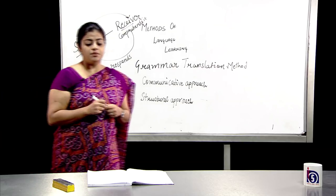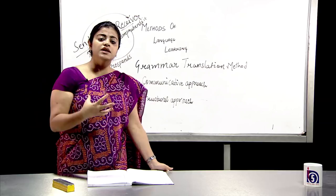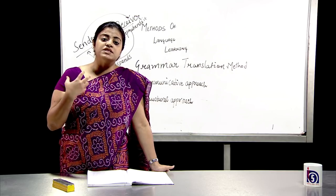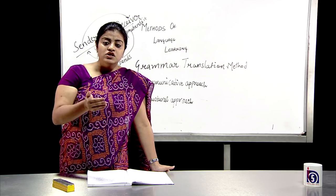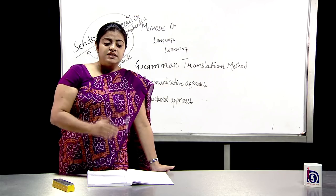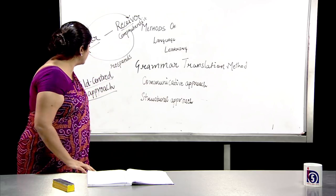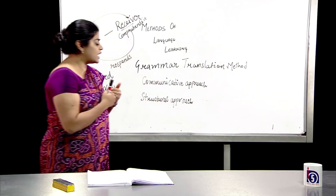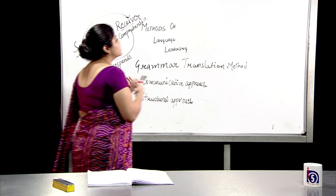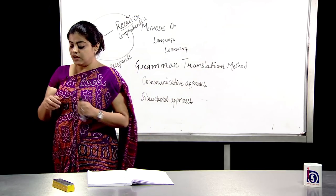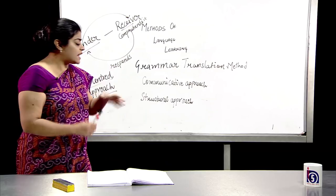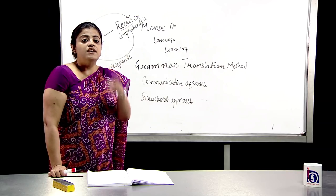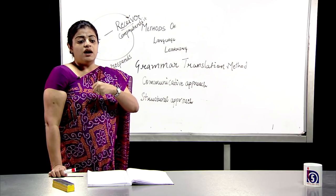Child-centered approach is one where the onus of learning depends on the child. The child is an active participant — not a passive recipient — who is interacting. The major talking time is taken by the student and not the teacher. In contrast, methods like audio-lingual or oral method involve a lot of repetition or drill, where students are repeating what has been told to them — not using their natural faculty for language.